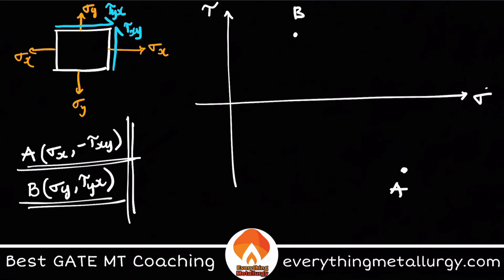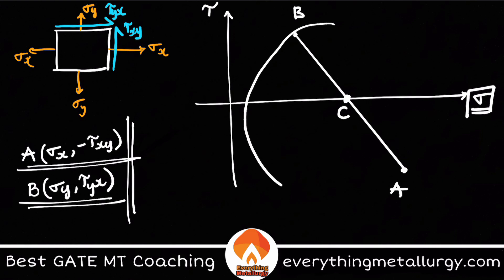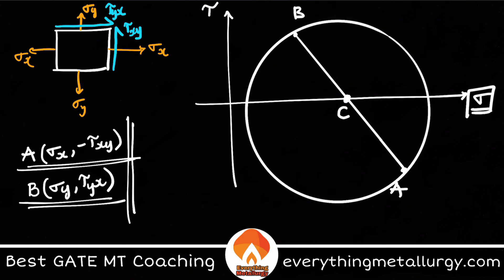The second step is to join points A and B with a straight line. The point where this line intersects the σ-axis is the midpoint of A and B, which becomes the center of the circle. Taking this center O and OA (or OB) as the radius, you draw the circle. This is the Mohr's Circle.